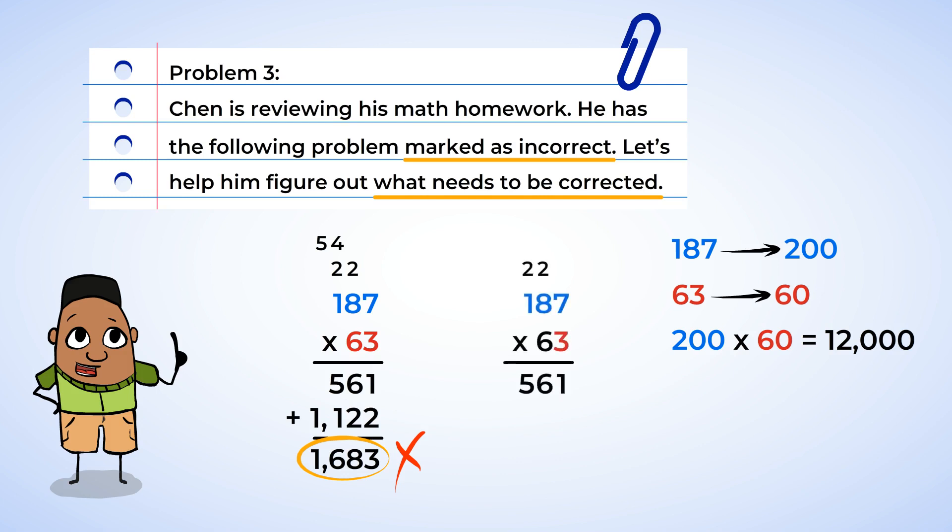Now, let's look at his work to see if we can spot his mistake. His multiplication with the three looks correct. All the multiplication was accurate, and the numbers were carried over correctly. But before multiplying by the six, what should Chen have done? He forgot to place the zero to hold the place value. Let's help him correctly finish the multiplication now that the zero is there.